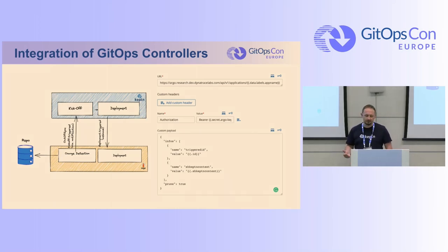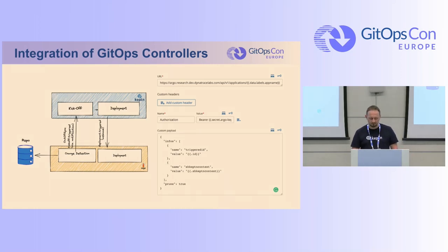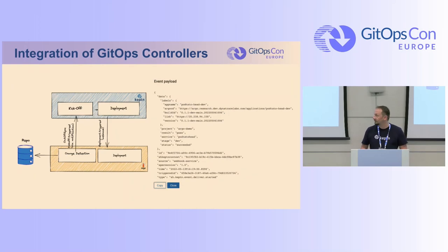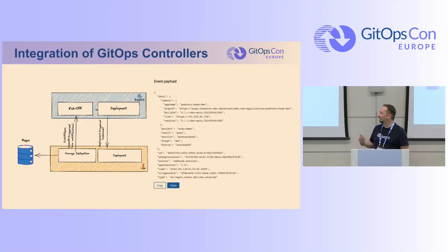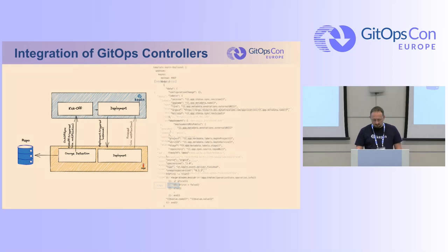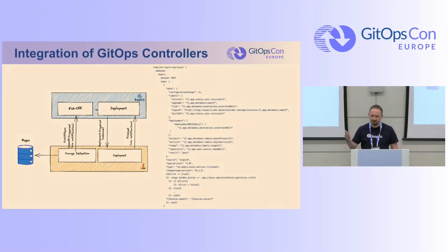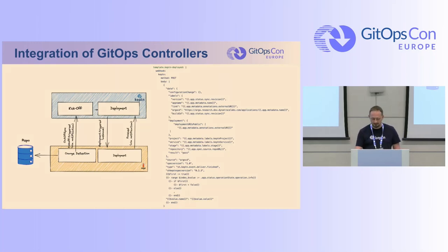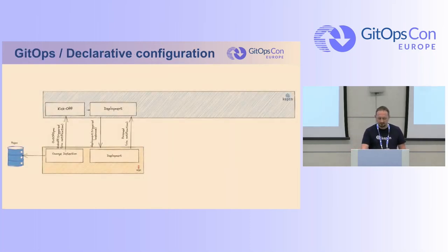Captain triggers the deployment itself via a webhook defined in Captain. This triggers the Argo API and sends information needed in Captain — such as the Captain context, which is a kind of correlation ID — and this gets passed through the whole deployment process. After everything has been deployed, Argo sends the result back to Captain via a notification, also sending variables and configuration so that Captain can continue its workflow.